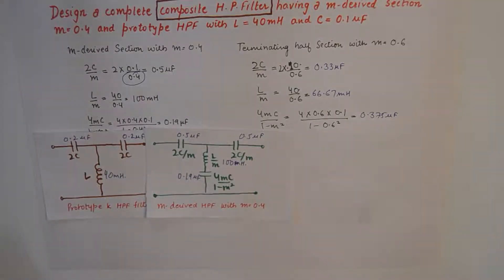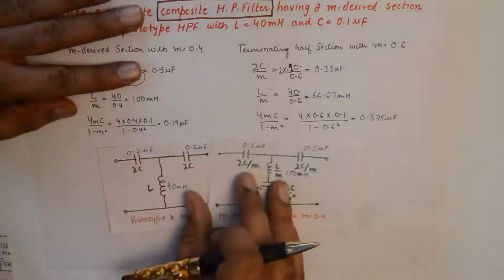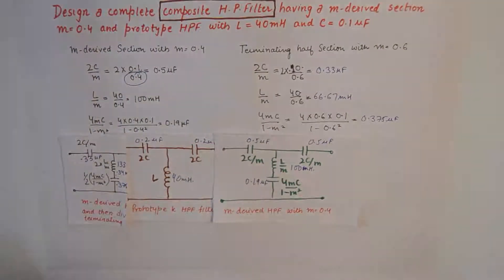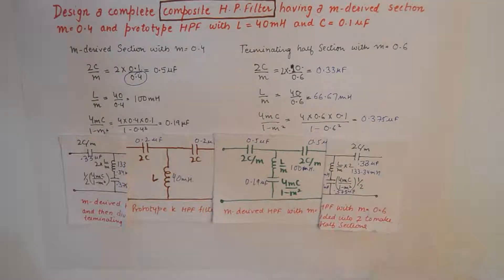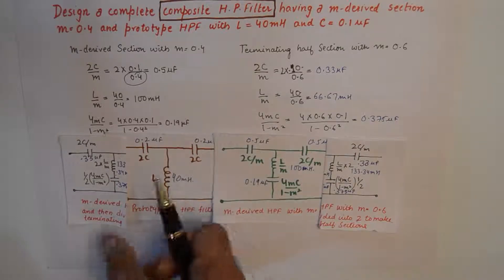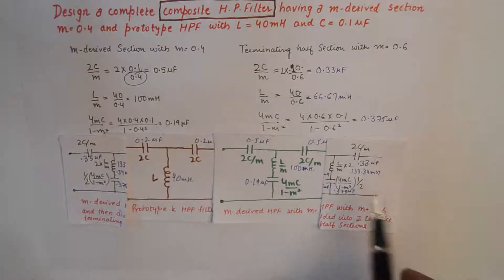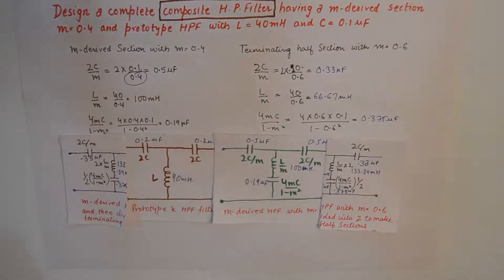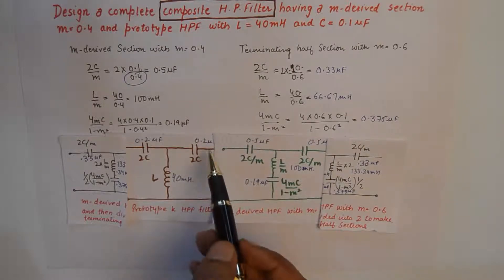So I'm going to tear this into two parts, and finally I'll have this section ready. That's how you join the terminating half sections. We use T sections to make the prototype filter, the M derived filter, and the terminating sections because it's easier to divide one shunt arm into two. This becomes our final composite high pass filter.